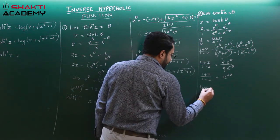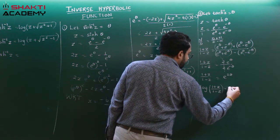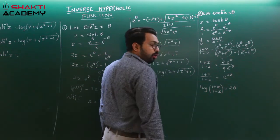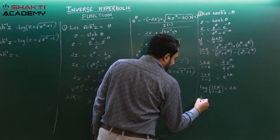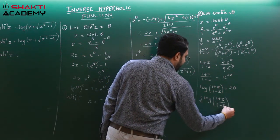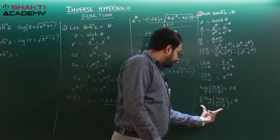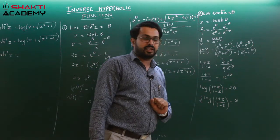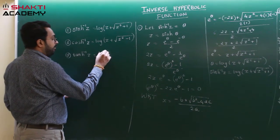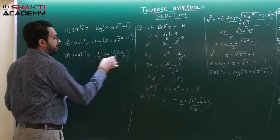Taking log on both sides: log((1+z)/(1-z)) = 2·theta. Bringing the 2 to the other side: theta = (1/2)·log((1+z)/(1-z)). But theta is tanh⁻¹(z), so tanh⁻¹(z) = (1/2)·log((1+z)/(1-z)). This is the formula for tan hyperbolic inverse.